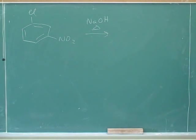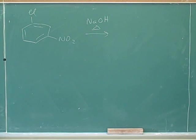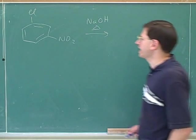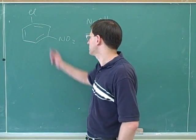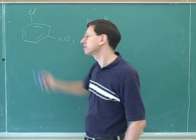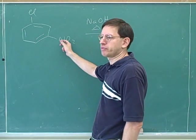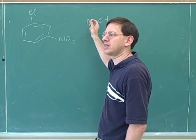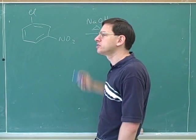So what type of reaction are we going to do here? Are we going to do the nucleophilic aromatic substitution or are we going to do the benzyne intermediate reaction? We can't do the nucleophilic substitution because the leaving group is not in the ortho or the para position. So even though we have the electron-withdrawing group, we're not going to be able to do the nucleophilic substitution. Instead, we have to do the elimination addition with the benzyne.